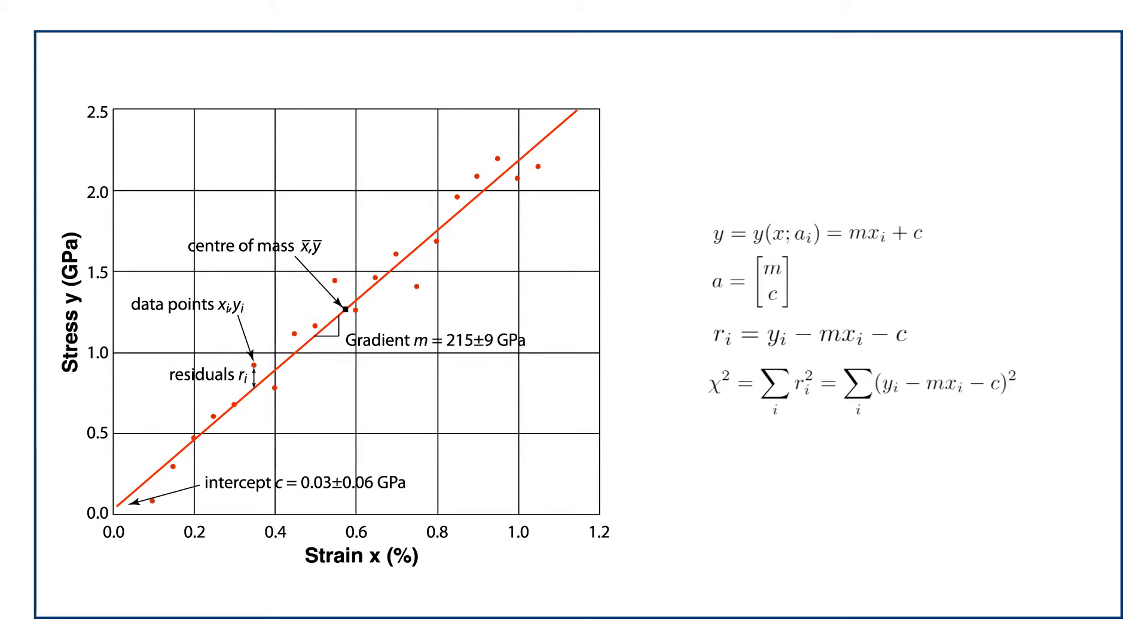Now, in order to find the optimal value of m and c, let's first define a residual r, which we define as the difference between the data items, y_i, and the predicted location of those on the line at y, which would be mx plus c. So r is y_i minus mx_i minus c.